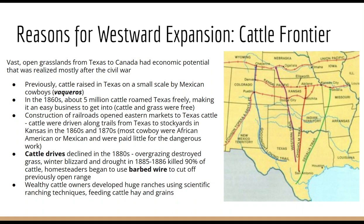On top of this, homesteaders were beginning to use barbed wire. These grasslands had very little wooden fencing because there wasn't a lot of wood available. But they started to use barbed wire to cut off what was previously just open rangelands, which actually prevented the cattle from roaming freely and eating grass wherever they wanted.